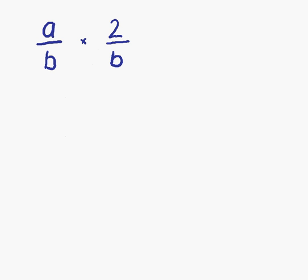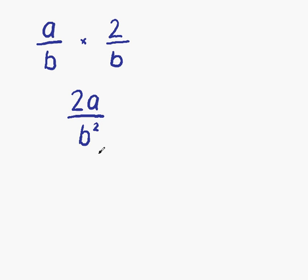Example 2: we have a over b multiplied by 2 over b. Multiplying the numerators, a times 2 gives us 2a. And then the denominators, b times b, which is b squared. Can we simplify? The answer is no, so 2a over b squared is our final answer.